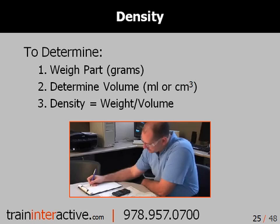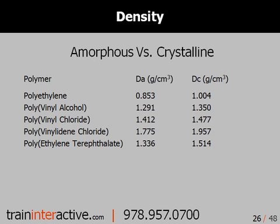Lastly, divide the weight of the part by the volume of the part. As mentioned earlier, density measurements can be used to determine the degree of crystallinity within a part. These numbers are examples of the density variations you may encounter. D sub a refers to the polymer density with virtually no crystallinity, while D sub c refers to the same grade of polymer which is allowed to cool very slowly and develop a high degree of crystallinity. As you can see, crystallinity can increase the density of the part by as much as 15%.